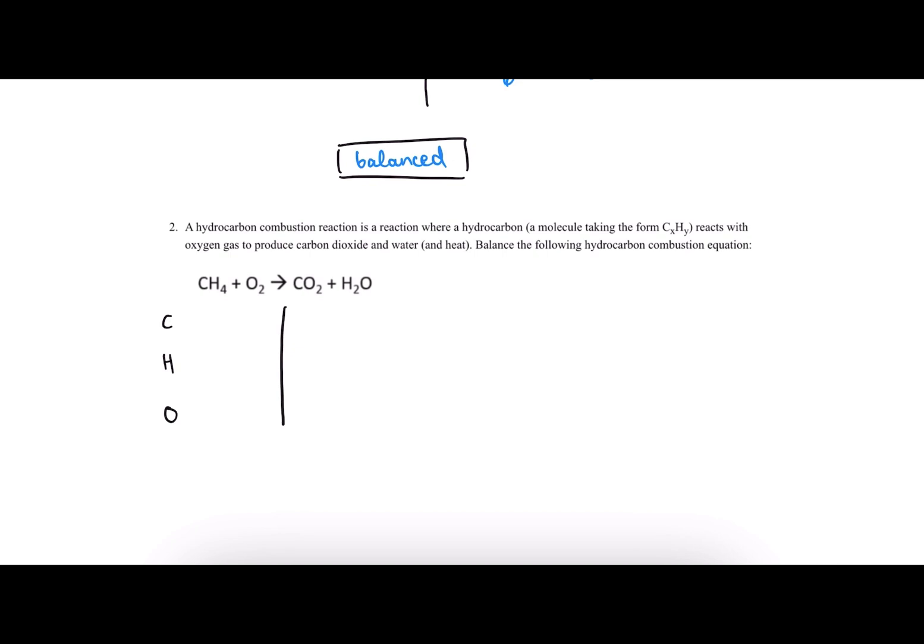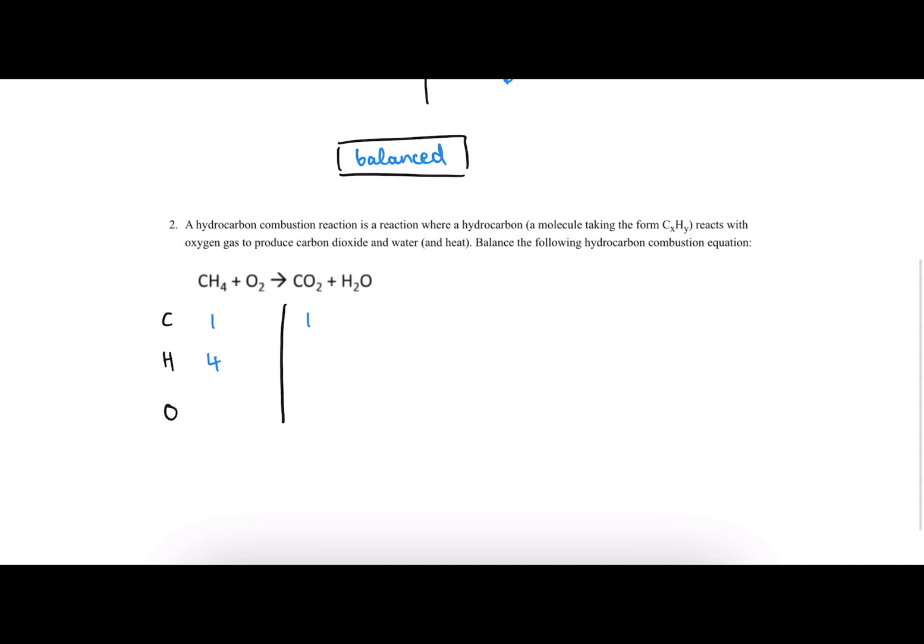Let's start by counting. We have one carbon on this side because we'll do one times one to get one, and we have one carbon here. We have four hydrogens on this side and two on this side. And then for oxygens, we have two on the left and looks like we have two here and one here.